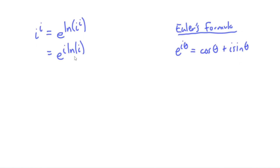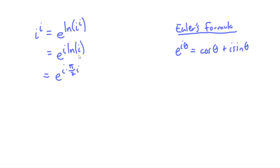What we're going to do instead is find out what natural log of i is directly. It turns out that natural log of i is pi over 2 times i. I'll explain that in a minute, but just take my word for it right now. That's actually called the principal value of natural log of i.